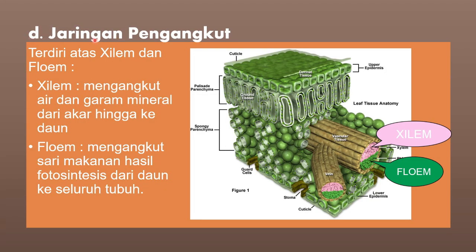Jaringan dewasa yang keempat yaitu jaringan pengangkut, yang terdiri dari dua: yang pertama adalah jaringan silem dan yang kedua adalah jaringan phloem. Silem dan phloem memiliki fungsi yang berbeda. Jaringan silem berfungsi untuk mengangkut air dan garam mineral dari akar hingga ke daun, tujuannya yaitu sebagai bahan baku untuk proses fotosintesis. Sedangkan phloem berfungsi untuk mengangkut hasil sari makanan dari daun ke seluruh tubuh tumbuhan — sari-sari makanan ini merupakan hasil dari proses fotosintesis.